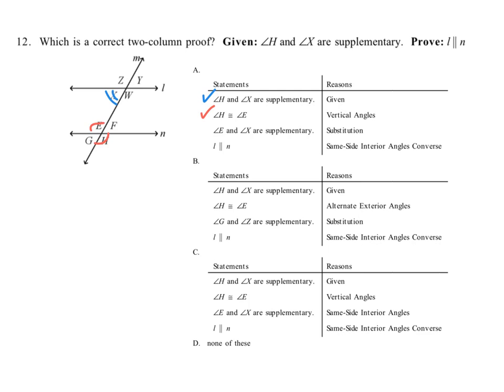Now they're using substitution: since angle H is congruent to angle E, wherever we see angle H we can replace it with angle E. Taking the original statement that angle H plus angle X are supplementary and substituting in angle E, it now says angle E plus angle X are supplementary through substitution — and that's true.